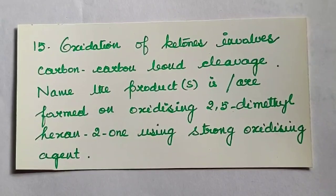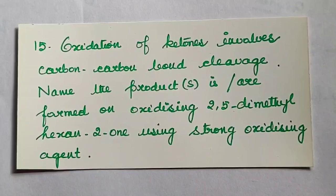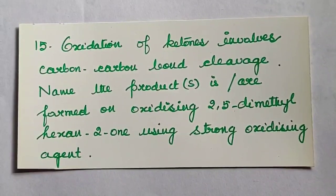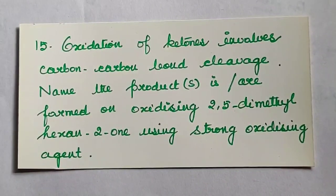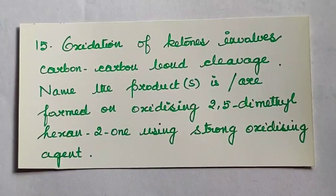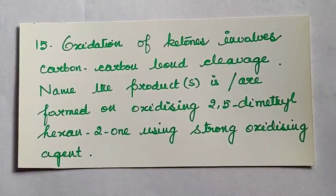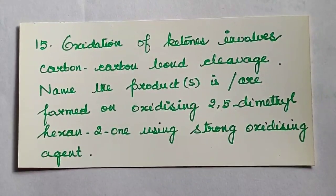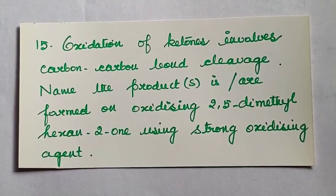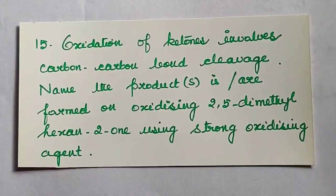Oxidation of ketones involves carbon-carbon bond cleavage. Name the product or products formed on oxidizing 2,5-dimethylhexan-2-one using a strong oxidizing agent. This is the question. So let's note: in this question, the compound is 2,5-dimethylhexan-2-one.